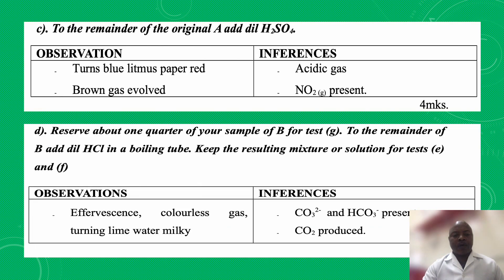So it takes us to the C section of the question. On the C section, to the remainder of the original A, add dilute sulfuric acid. You should see that on adding dilute sulfuric acid, observation: it turns blue litmus paper red, brown gas evolved. On the inference section, you put it there, it's acidic gas that is being released. And looking at your confirmatory booklet, you will see it is nitrogen dioxide gas or nitrogen oxides that is present.